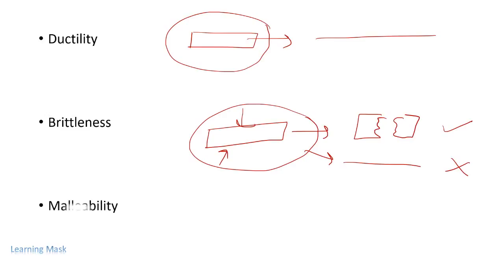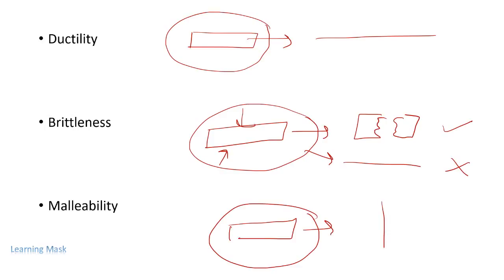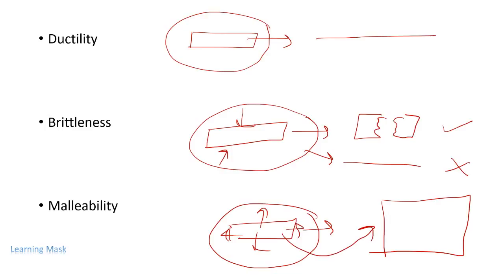The next property is malleability. Malleability is a property in which a material can be changed into thin sheets — that is, by applying pressure on all sides we change the material into sheets. This is known as malleability.